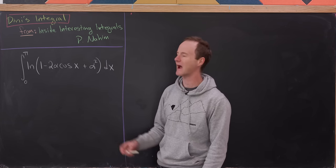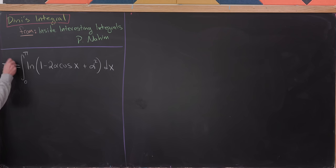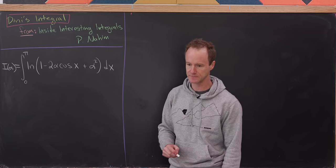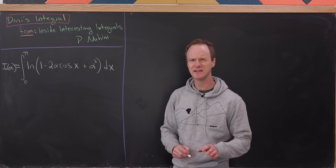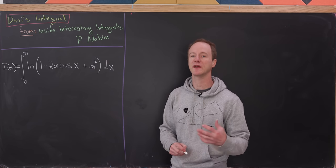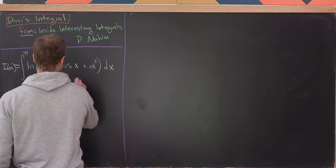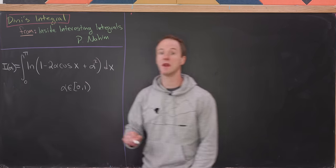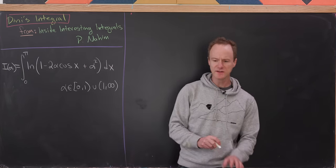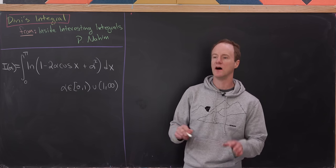To get this started, I'm going to consider alpha as a variable, and then the output of this integral will depend on alpha. I'll call that a new function called I of alpha — I for integral. We're only going to consider a certain range of values of alpha: either between 0 and 1, not including 1, or between 1 and infinity. You'll see why we cannot have alpha equal to 1 via our calculation.